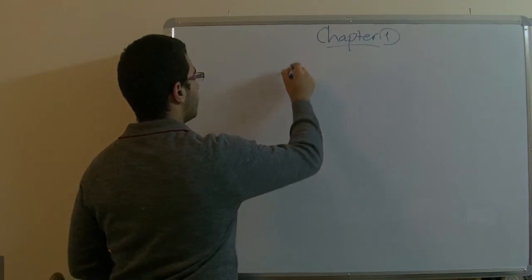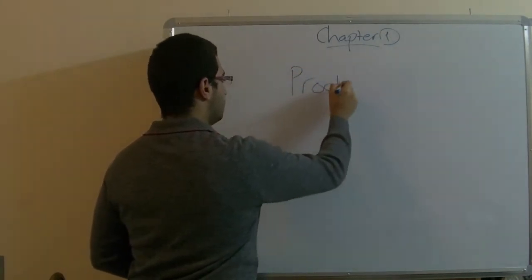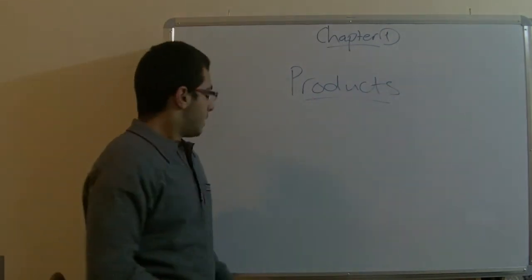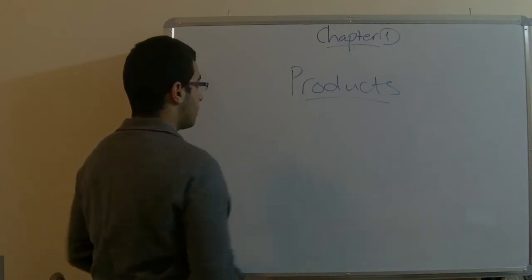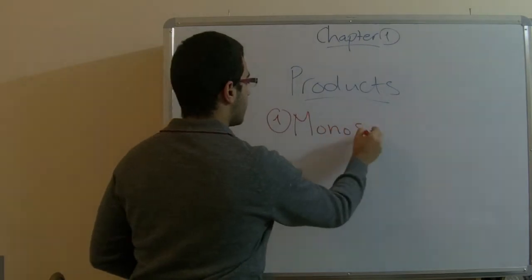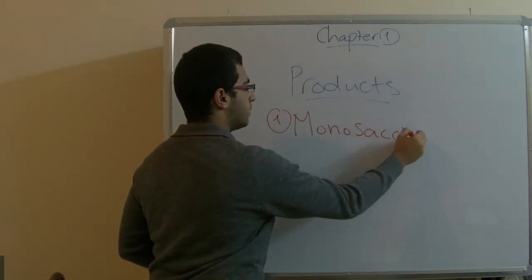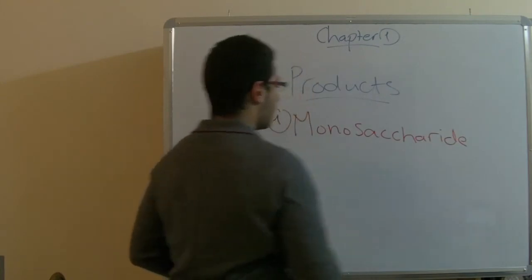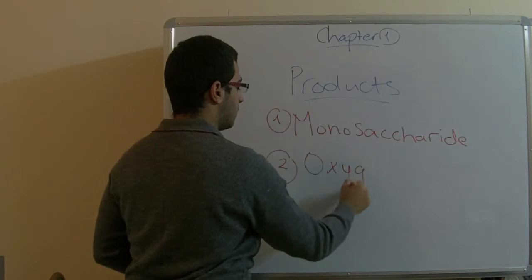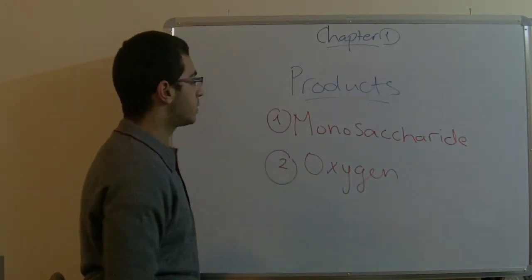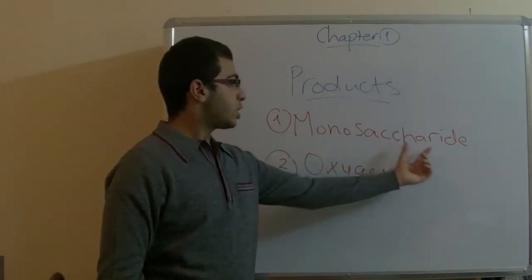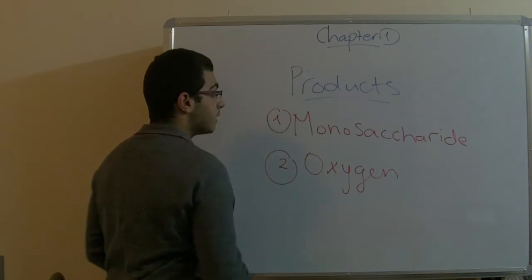Today, we will first mention the products of photosynthesis. The first important product of photosynthesis is monosaccharide and the second is oxygen. We won't talk about the oxygen but we will talk about the monosaccharide. The monosaccharide is glucose.